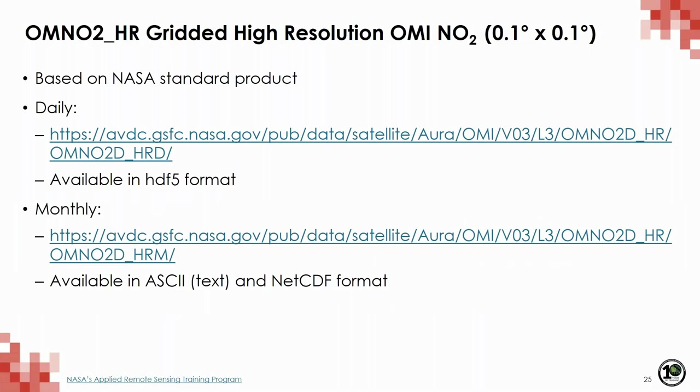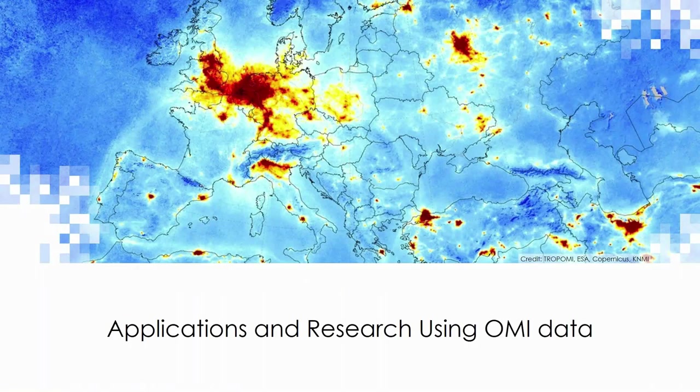There is a higher resolution Level 3 product available at two different temporal resolutions, created by my colleague Loc Lamsal in a manner very similar to the quarter-degree files available from the GES DISC. These daily files can be found at the URL on your screen in HDF5 format, and monthly files can be found in both text and NetCDF format.